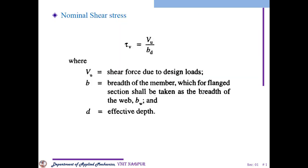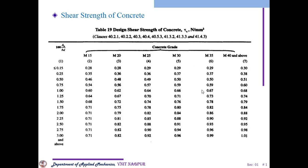The nominal shear stress given by tau V is calculated as: tau V = VU / (B × D), where VU is shear force due to design load, B is breadth of the member (for flange sections should be taken as BW), and D is effective depth. The design shear strength of concrete, tau C, is given in table number 19, clause 40.2.1 and 40.2.2 to 41.4.3, expressed in Newton per mm square, based on the value of 100 Ast / BD.